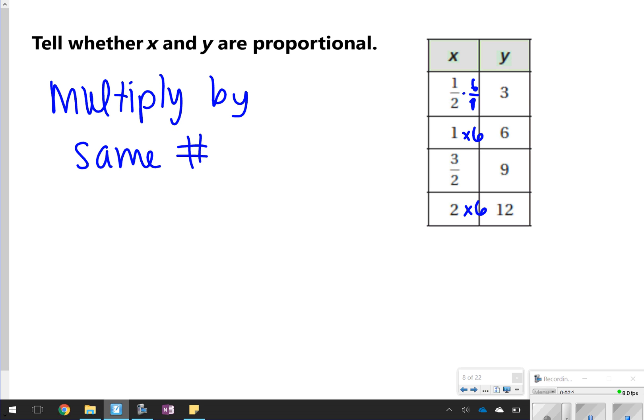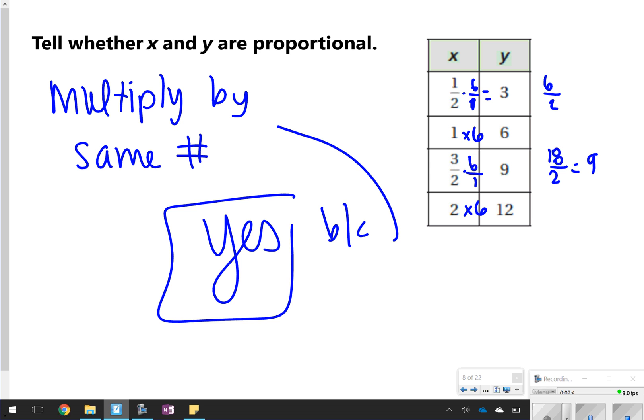1/2 times 6/1 is equal to 6/2, which is equal to 3. And 3/2 times 6/1, that is 18/2, which is equal to 9. So, yes, all of these have been multiplied by 6. So, I would say yes, because they have been multiplied by the same number.